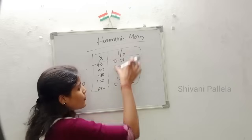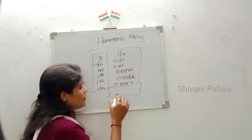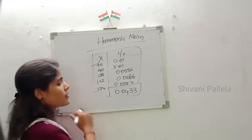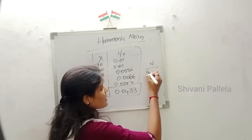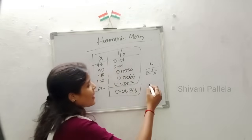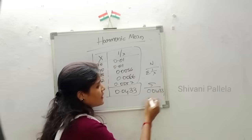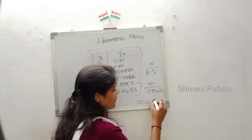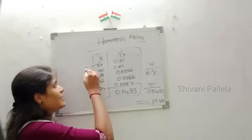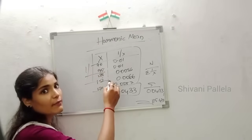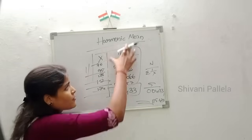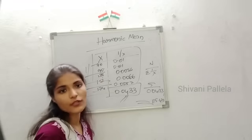The total of the 1/X column is 0.0433. Now we substitute into the formula HM = N divided by sigma (1/X). N is the number of observations: 1, 2, 3, 4, 5 — so N = 5. Therefore HM = 5 divided by 0.0433.